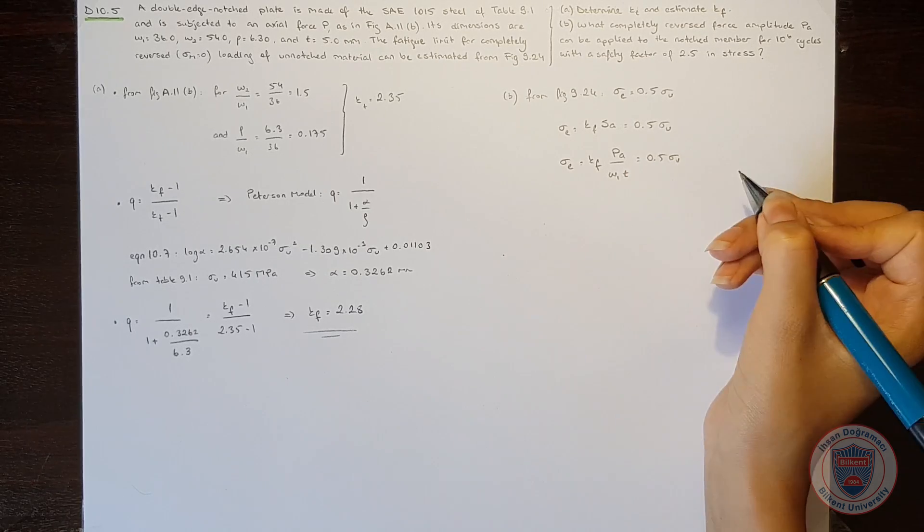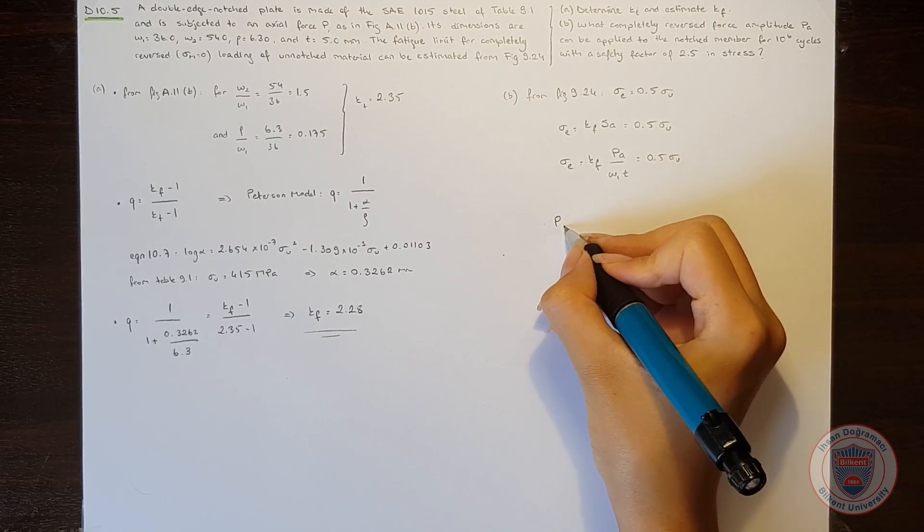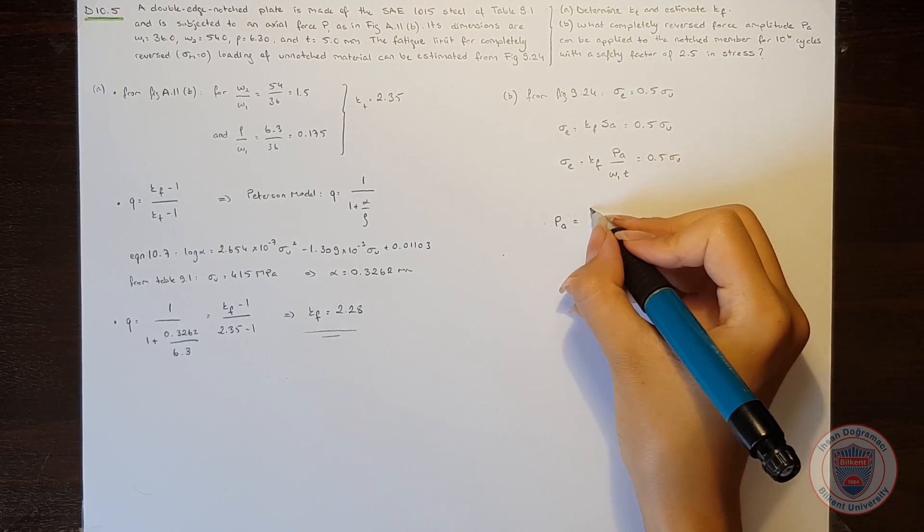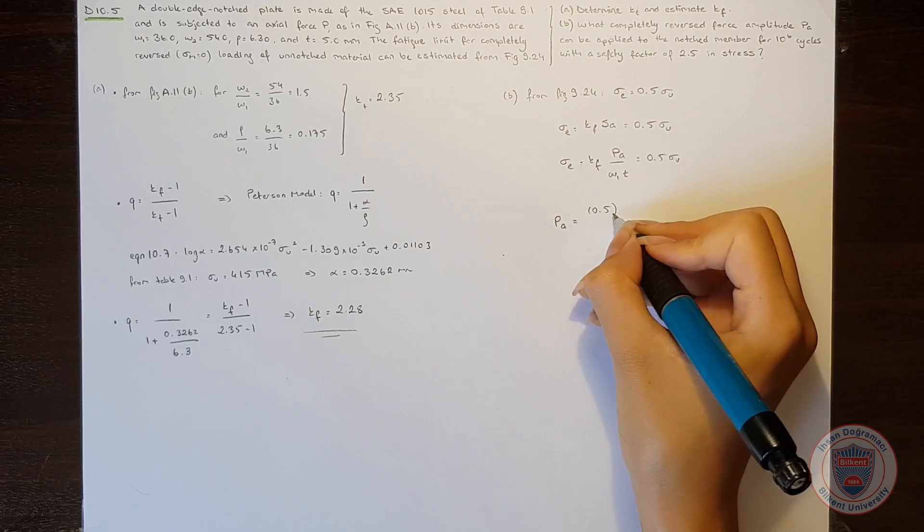Sa is equal to Pa over the width 1 times thickness and it is equal to half of the ultimate strength. When we leave the force amplitude alone and substitute the values, we will obtain Pa is equal to...